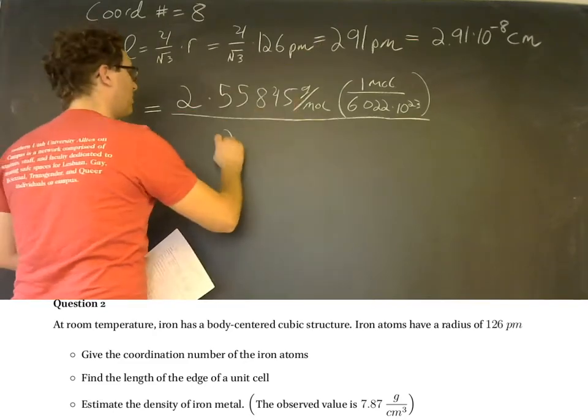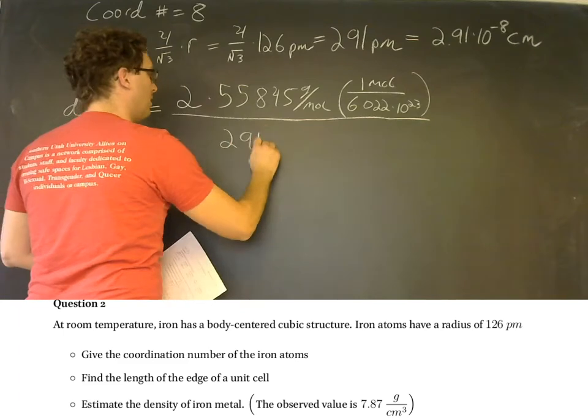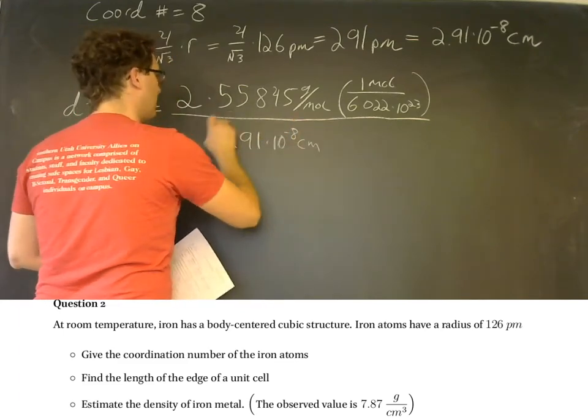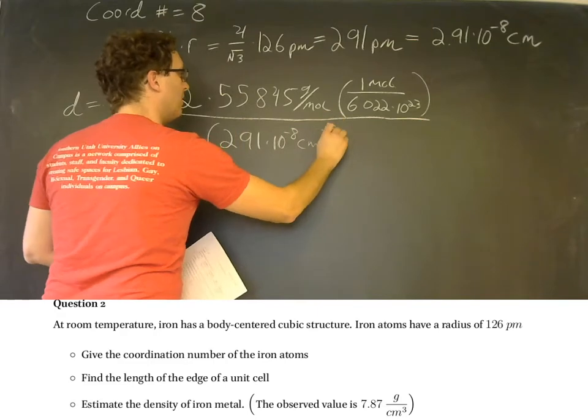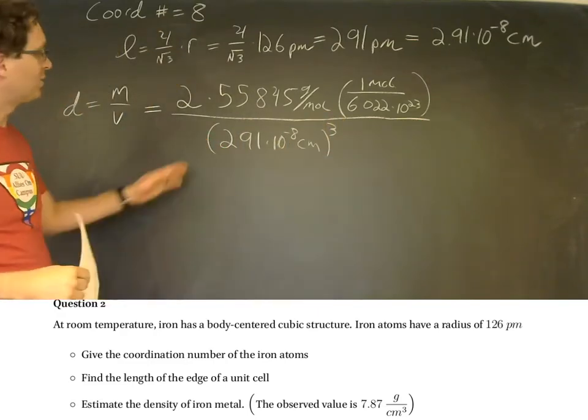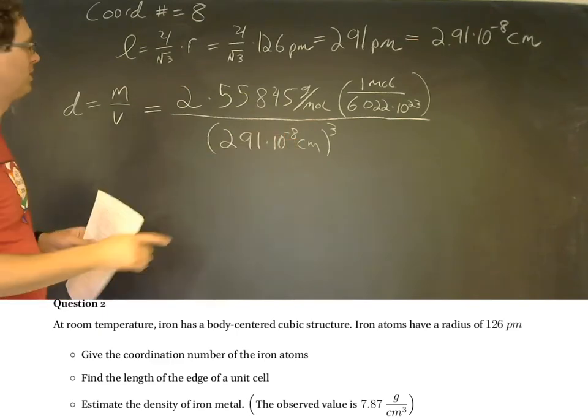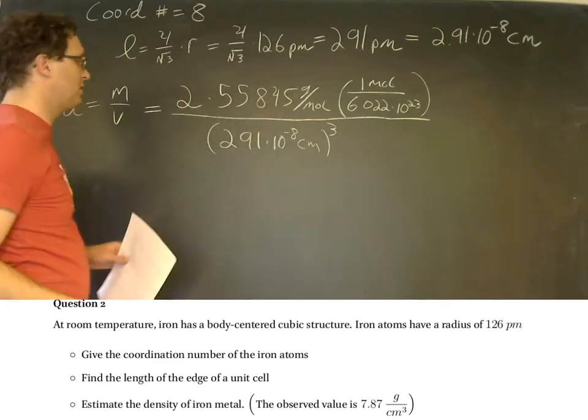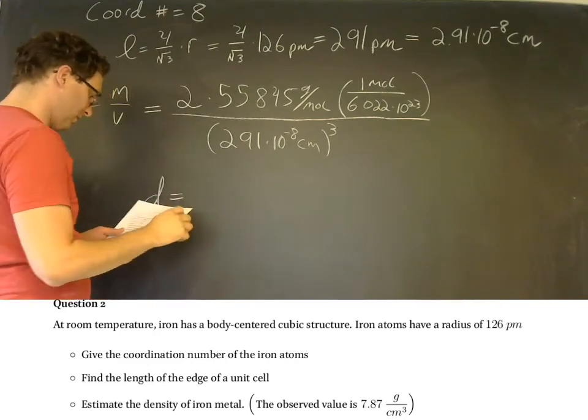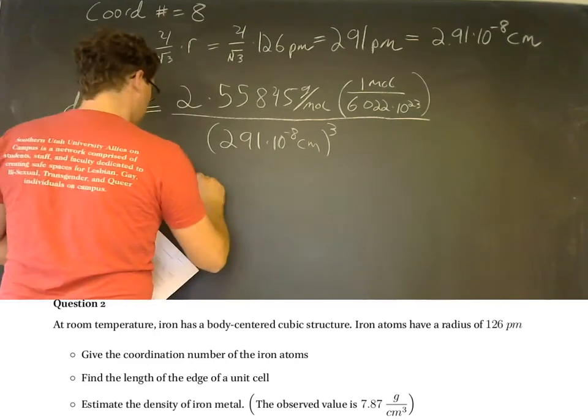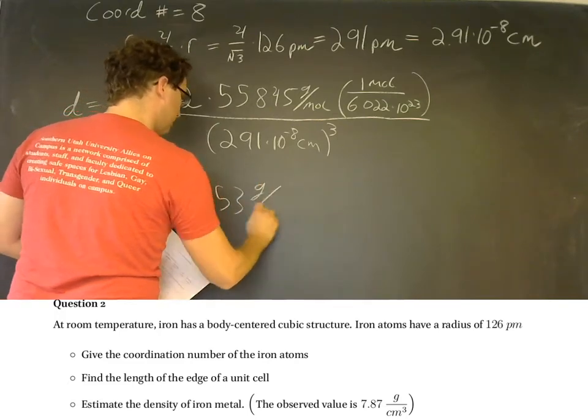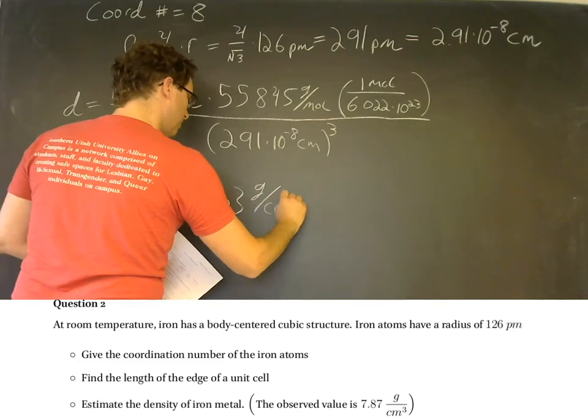Well we've got that length 2.91 times 10 to the negative 8 centimeters. And the unit cell is a cube. So length times width times height will just be that number cubed. Now all of this you can just put into your calculator. And we'll end up with a density equal to 7.53 grams per centimeter cubed.